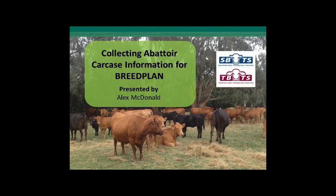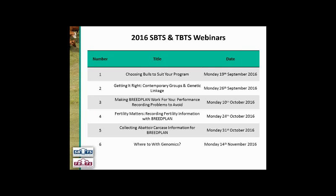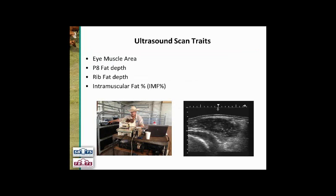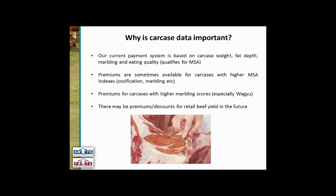Welcome everyone, Melbourne Cup Eve. We're going to talk about collecting carcass information for breed plan. This is the fifth of six webinars, with another one next week. We'll start by talking about what traits can be collected, where they get collected, and by whom. Ultrasound scan technology allows accredited assessors to measure eye muscle area, P8 or rump fat, rib fat, and intramuscular fat on live animals — those are the four traits reported from ultrasound scanning.